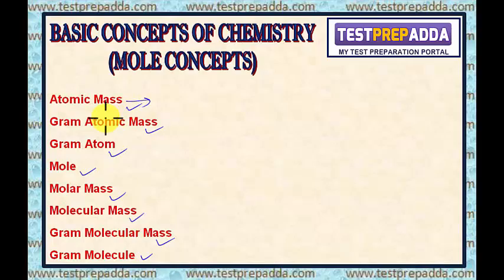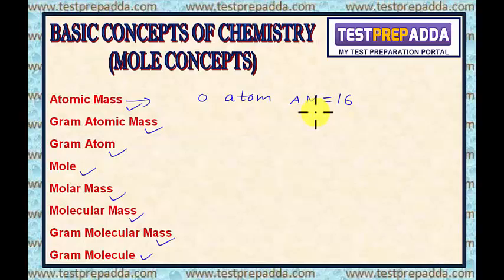Atomic mass tells us how many times an atom is heavier than 1/12th mass of carbon-12. For example, the atomic mass of oxygen is 16, which means oxygen is 16 times heavier than 1/12th mass of carbon-12 isotope.